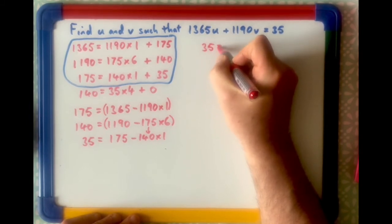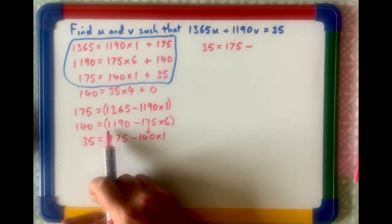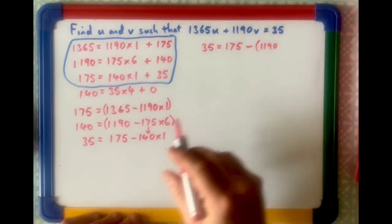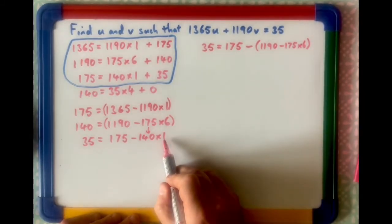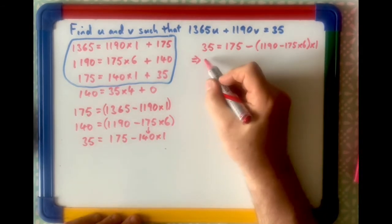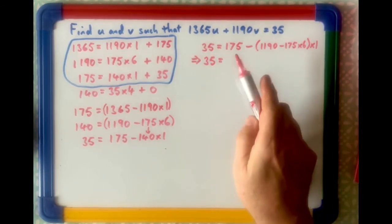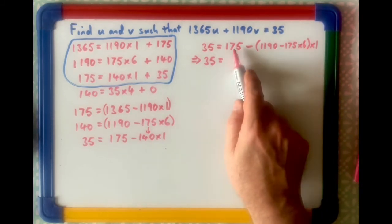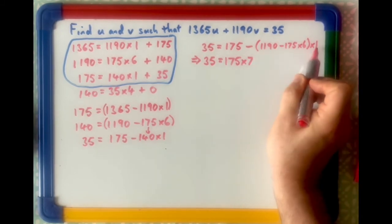Which is 35 equals 175 minus, now remember, instead of 140, we're putting in this bracket. So, it is that bracket, which is 1190 minus 175 times 6, and that whole thing is times 1. Better tidy this up a little bit before we do the next bit, otherwise it's going to end up filling half the thing and make you more likely to make mistakes. So, 35 equals, now look at it, minus a minus is a plus, so that's times 1, so it's going to be 6 175s, plus the one we've already got, is 175 times 7, minus 1190 times 1.